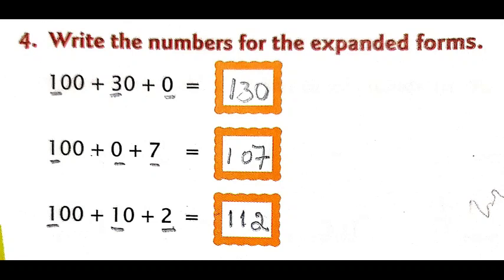Now let's go to the fourth question: write the numbers for the expanded forms. They have given the expanded form and you have to write down the number. The first one is 100 plus 30 plus 0. In 100, what digit do you underline? Underline 1. In the tens place, 30 is there, so underline 3. And 0 in the ones place — write it as it is. So we get the number 130.